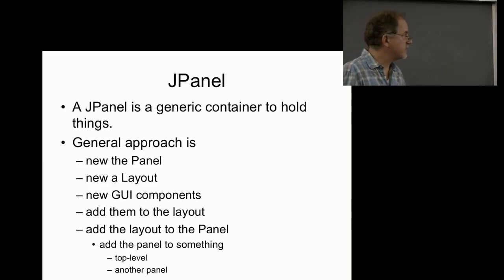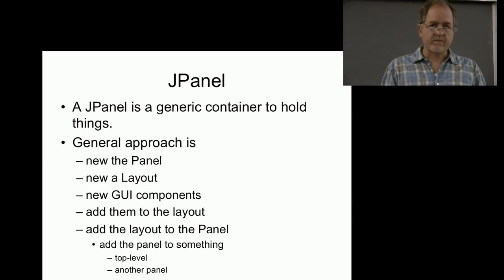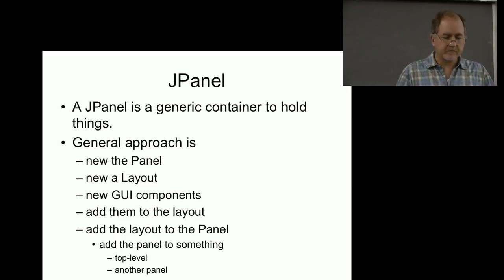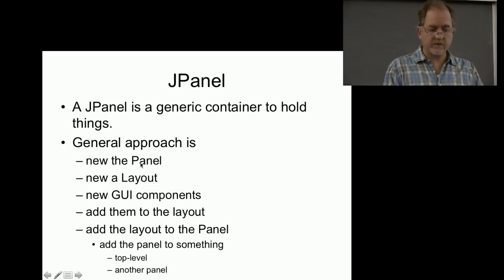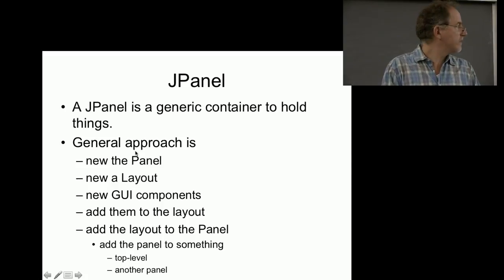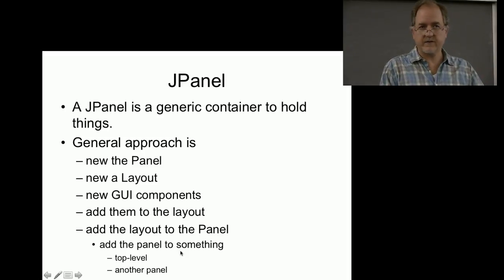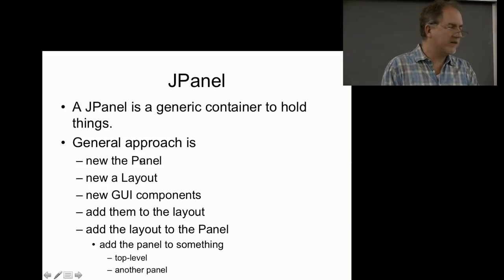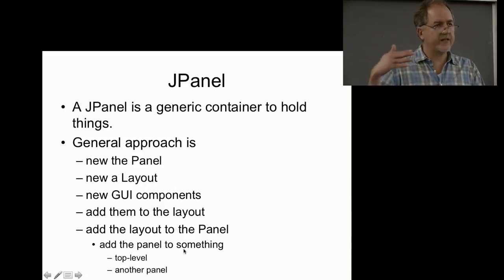A JPanel is basically a generic container to hold things. It doesn't provide any real functionality on its own - it's just an organizational tool. Typically you'll make a new JPanel, make a new layout that attaches to it, make GUI components like buttons and sliders, add those to the layout, add the layout to the panel, then add the panel to your JFrame. There are all these little steps and checklists to get used to as you build these applications.